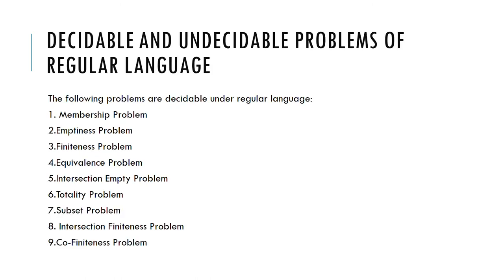Now we will go through the decidable and undecidable problems of regular language. I have made a trick to remember these. In future videos we will discuss a table so you can easily identify decidable and undecidable problems. The trick is the acronym MEFEITSIC — M-E-F-E-I-T-S-I-C — the first letters of each problem. We will discuss this further in the next lecture.